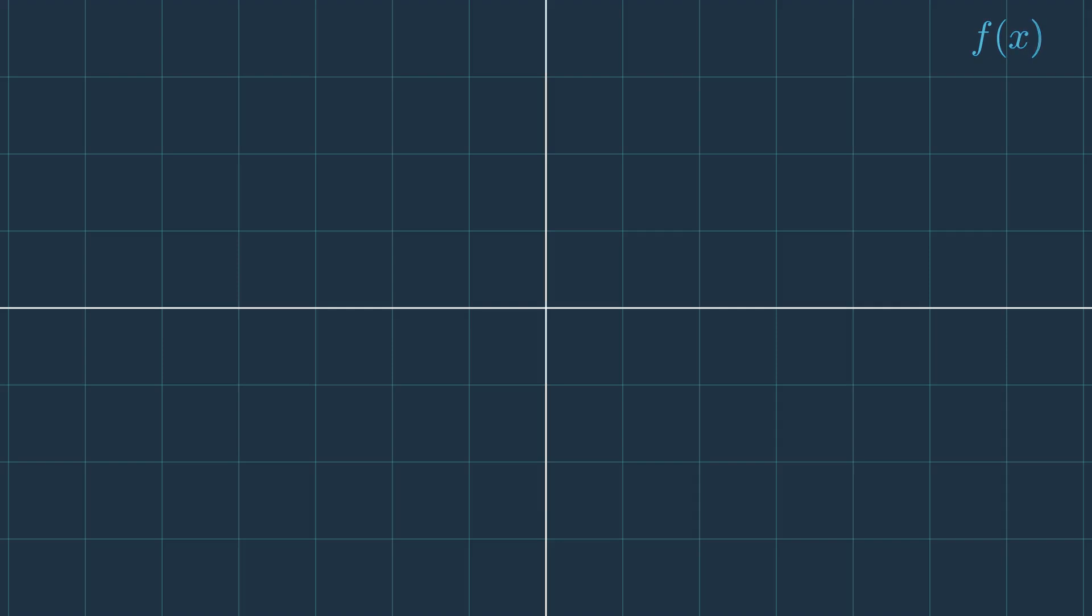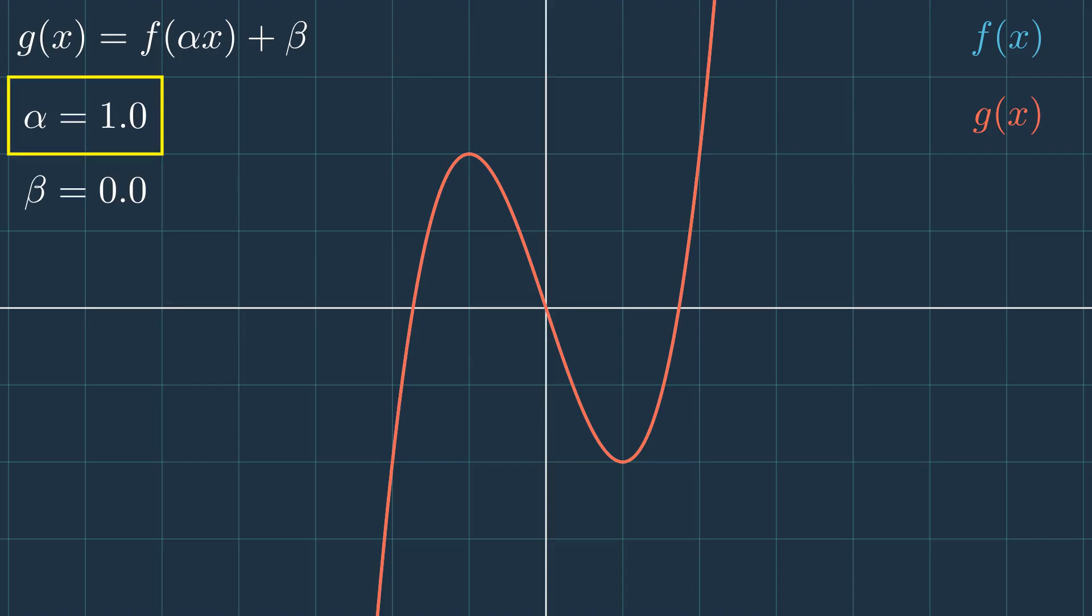From a visual point of view, if you have a function f of x and you construct another function g of x, and this function is equal to f of alpha x plus beta, if you move the alpha, you will see that the function is stretching along the x-axis, like you see in the animation. But if you move the beta constant, you will see that the function is going up and down without stretching or squeezing.